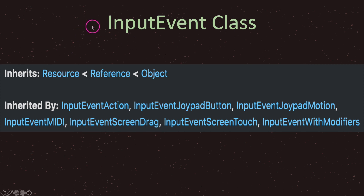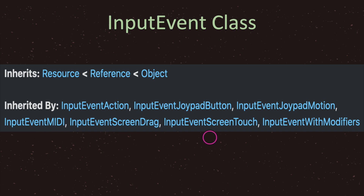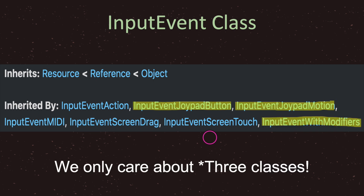In the InputEvent class in the API, we can see what it inherits from. InputEvent inherits from the Resource class, which is also a Reference, and InputEvent has subclasses. Even though we have many subclasses — including MIDI and touch events like InputEventScreenTouch for iPhones — in this episode I just want to focus on three subclasses. The first two, joypad button and joypad motion, we'll deal with briefly at the end of the episode.